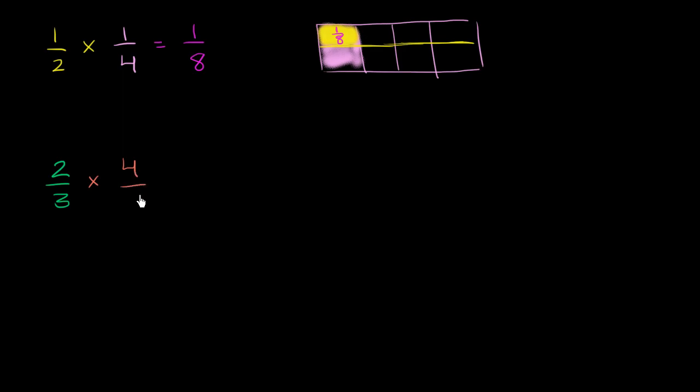Let's do another example, but now let's multiply two fractions that don't have 1s in the numerator. So let's multiply 2/3 times 4/5. I encourage you to pause the video and try to represent 4/5 of a whole, then represent 2/3 of that 4/5, and see what fraction of the whole you actually have.